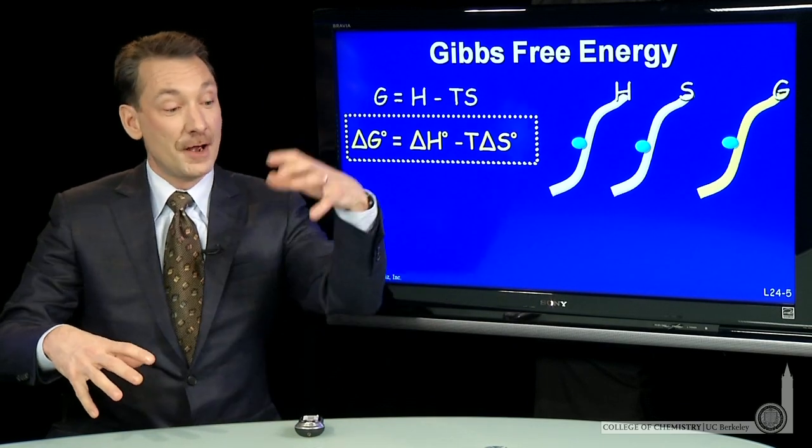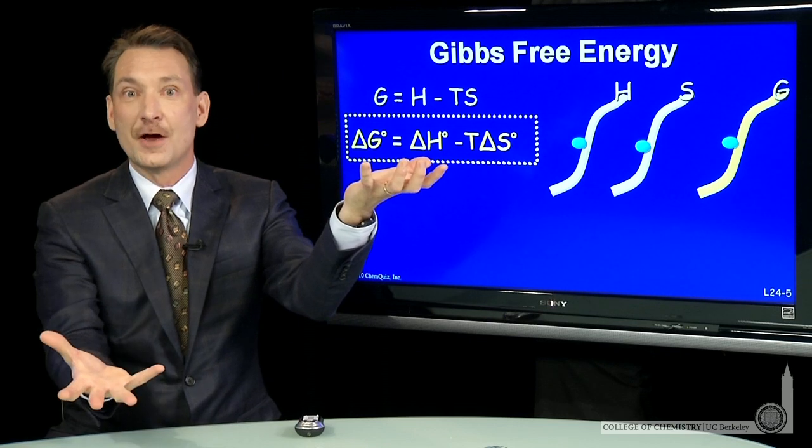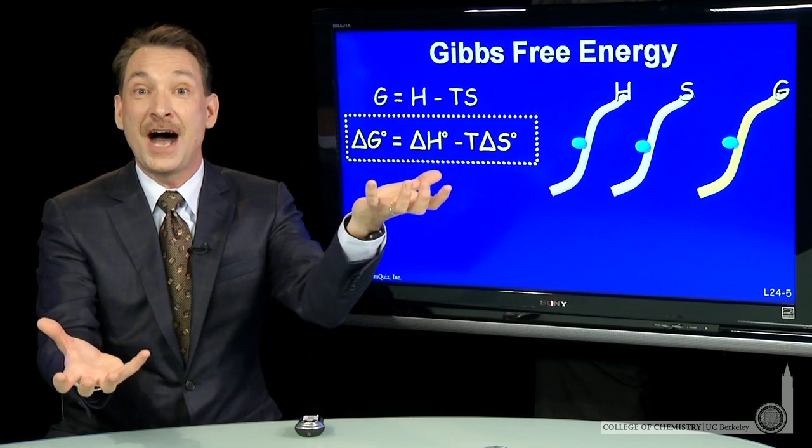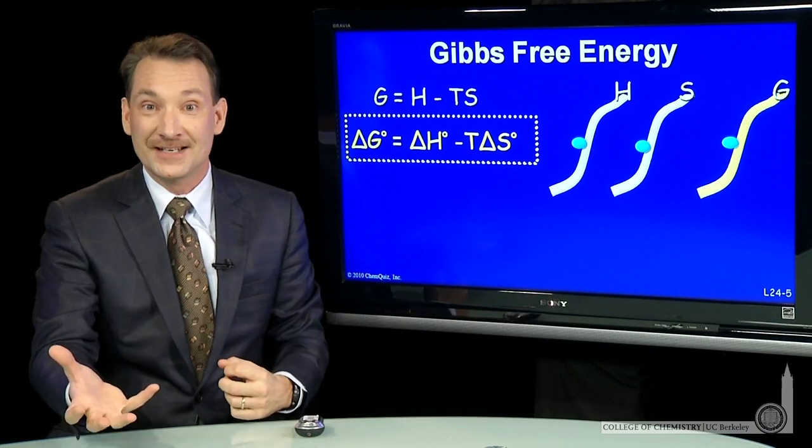If the standard state products are higher in energy than the standard state reactants, then that's a positive delta G, and that says that the reactants are favored.